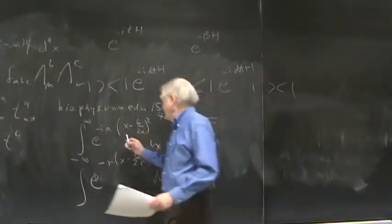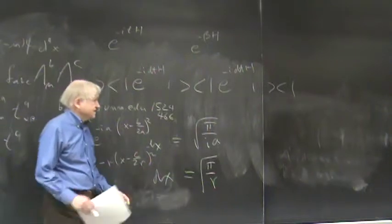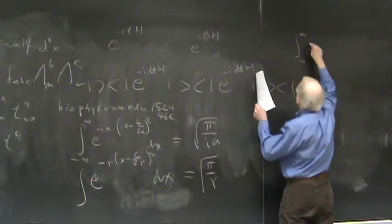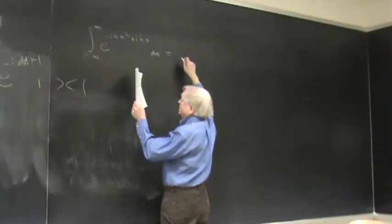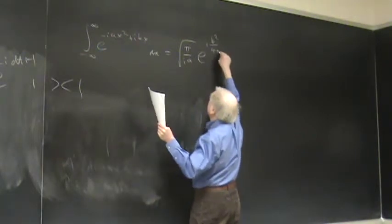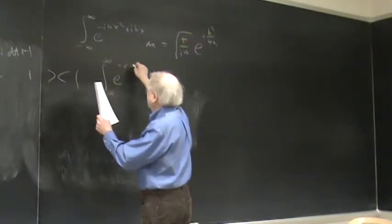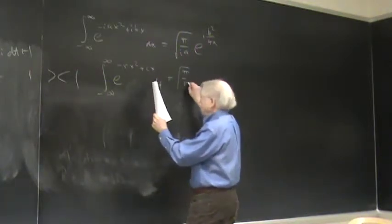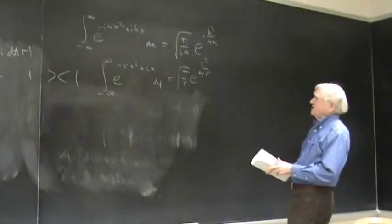So if you just multiply out these exponentials, you see there's a piece that doesn't depend upon x in both cases. And so that means you have an integral from minus infinity to plus infinity of e to the minus rx squared plus cx dx, which equals square root of pi over r times e to the c squared over 4r.